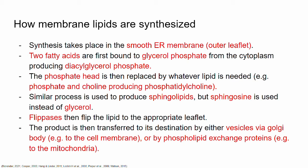The chemical process is as follows: we have two fatty acids that exist freely in the cytoplasm, and we have something called glycerol phosphate, which is also found in the cytoplasm. These two are bound together through a chemical reaction, making something called diacylglycerol phosphate. This final product will be part of the smooth ER membrane itself.